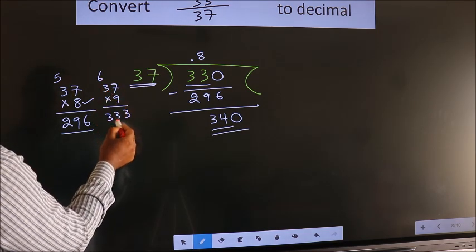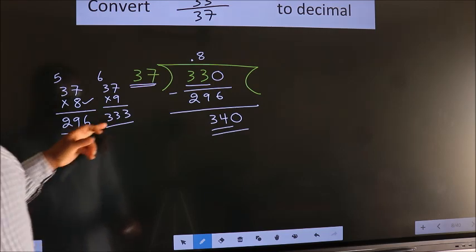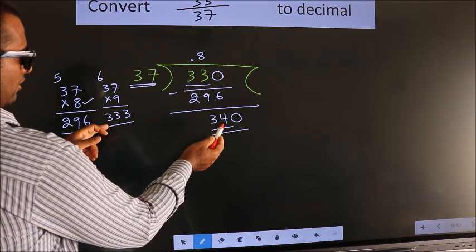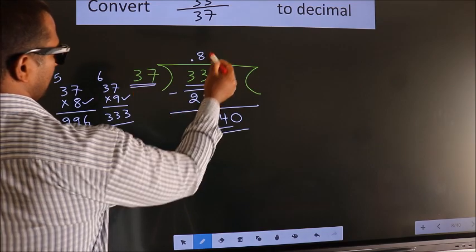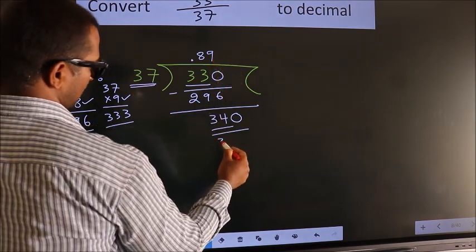9 times 7 is 63, carry 6. 9 times 3 is 27 plus 6 is 33. So 333 is close to 340, so we go with 9. 333.